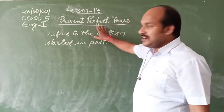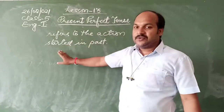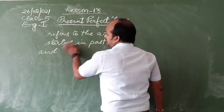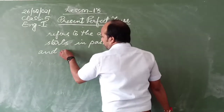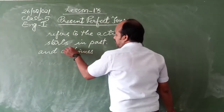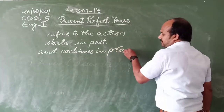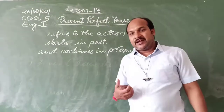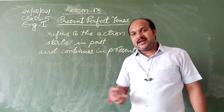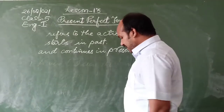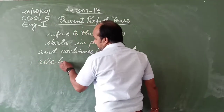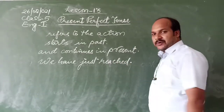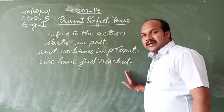So present perfect tense refers to the action which started in the past, continues in the present, or in the present it has finished. Like if we say, 'We have just reached' - this is an example of present perfect tense.